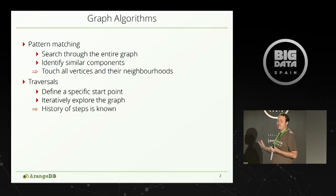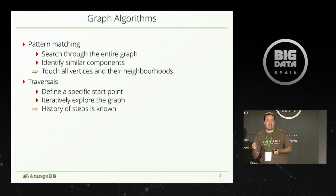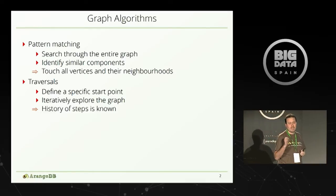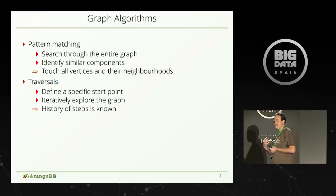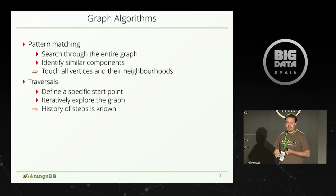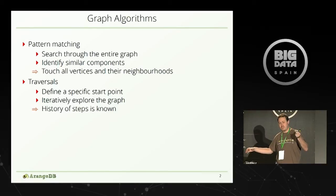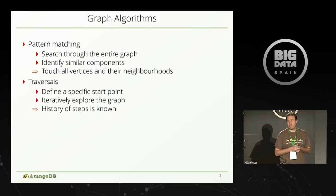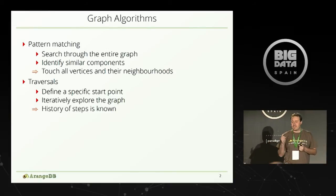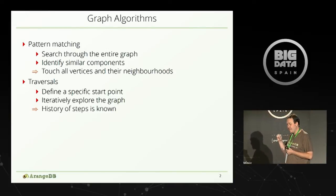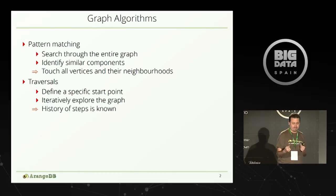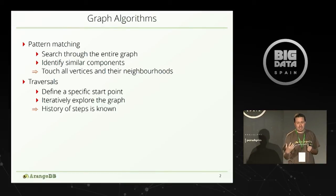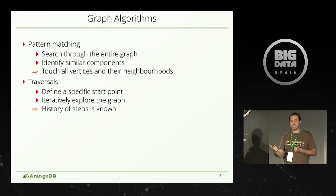Next are traversals. Traversals start at one specific point — most of the time, one vertex — and from there you iteratively explore your graph and try to collect some data. For example, you start at one point and try to find the shortest path to some other point. A special thing about traversals is that in every step, you know the results of all previous steps. So if I'm at the third vertex in a traversal, I know what vertices one and two have already stored.